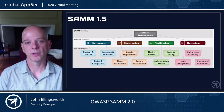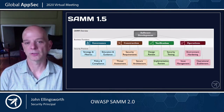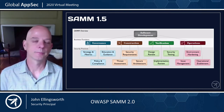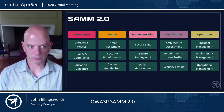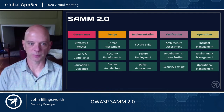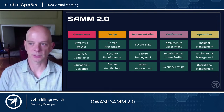At a high level, version 1.5 had four business functions: governance, construction, verification, and operations, each broken down with three separate security practices. Version 2.0 changed some of those names — construction is no longer in the framework; it's been broken out into design and implementation, giving us five total: governance, design, implementation, verification, and operations.